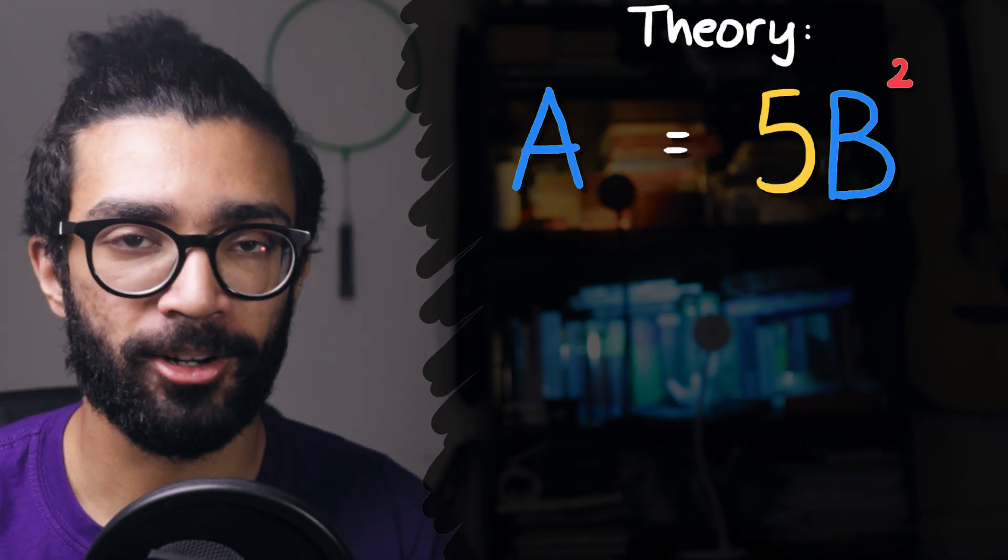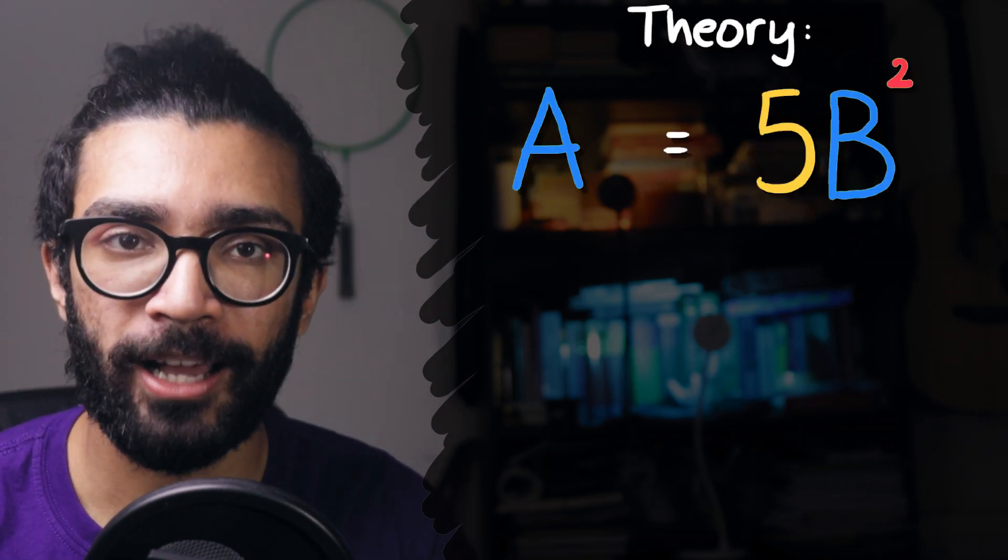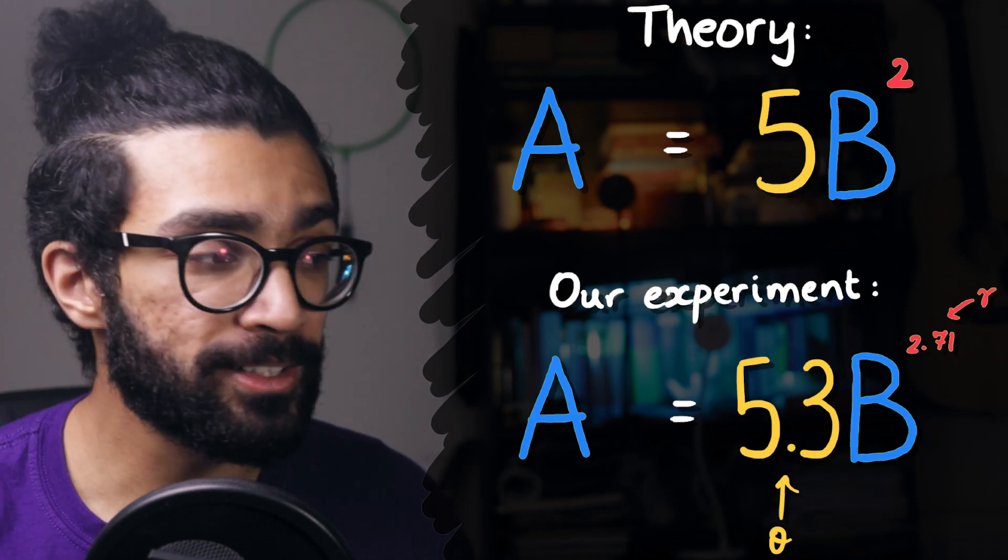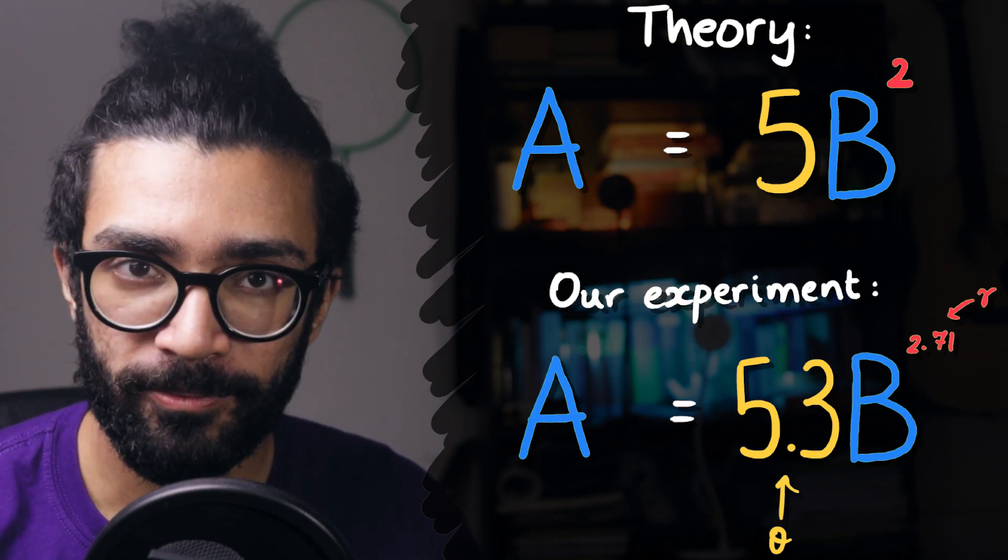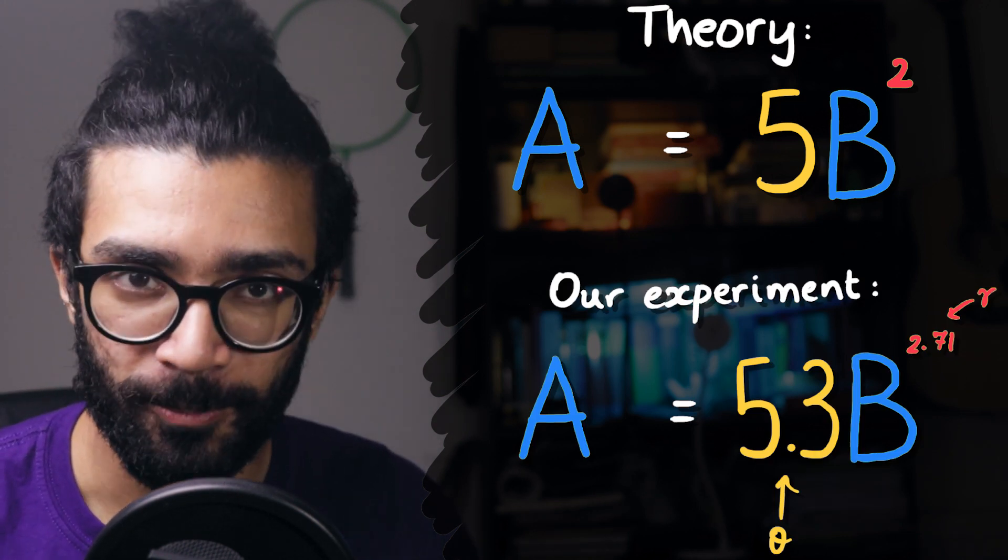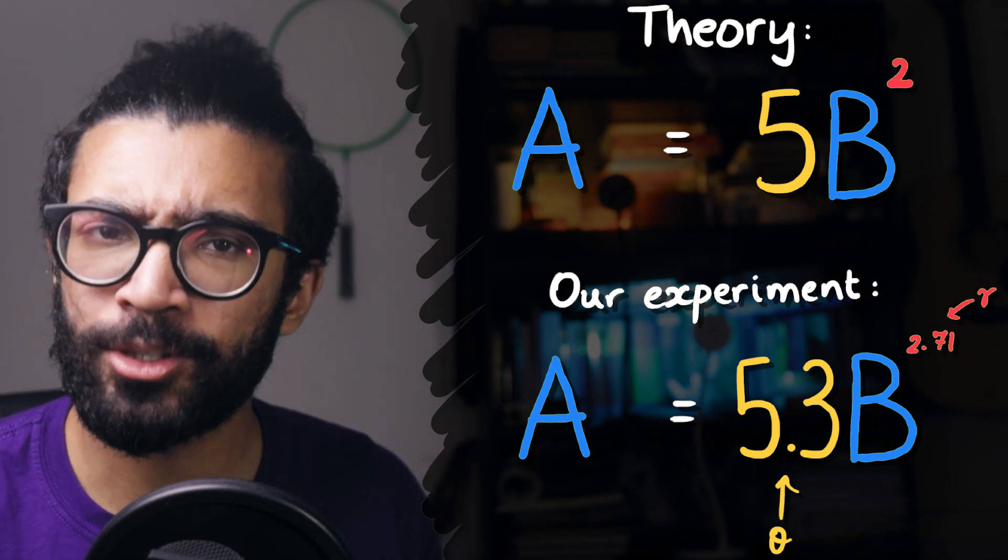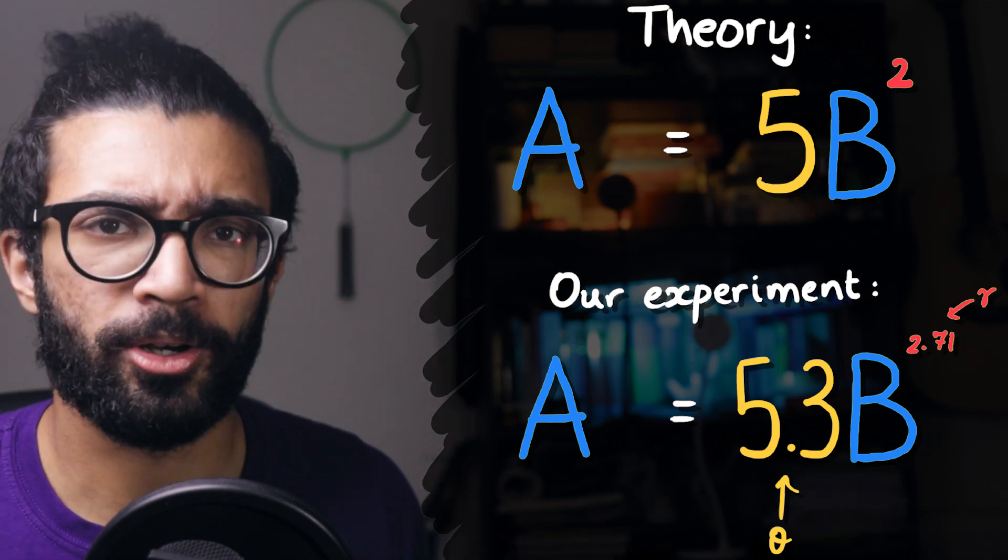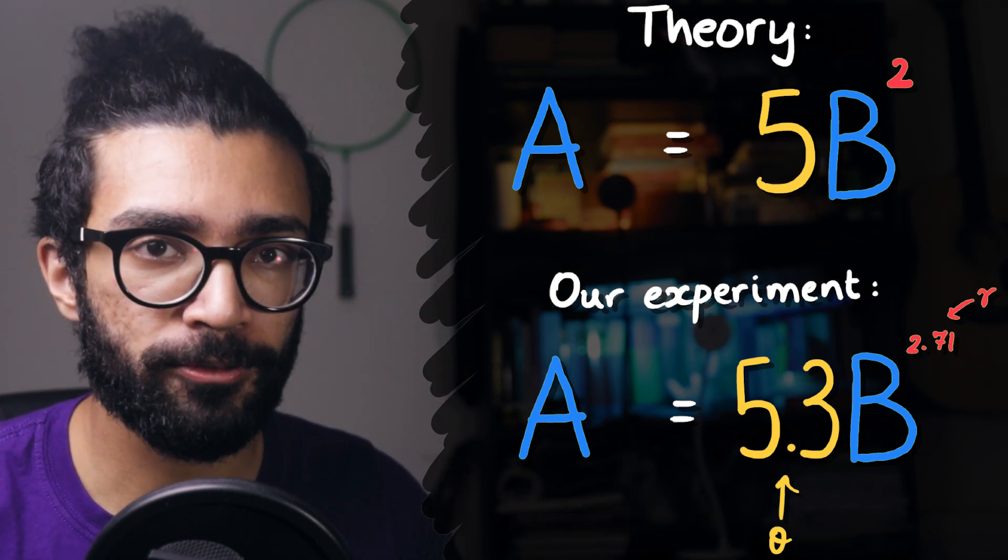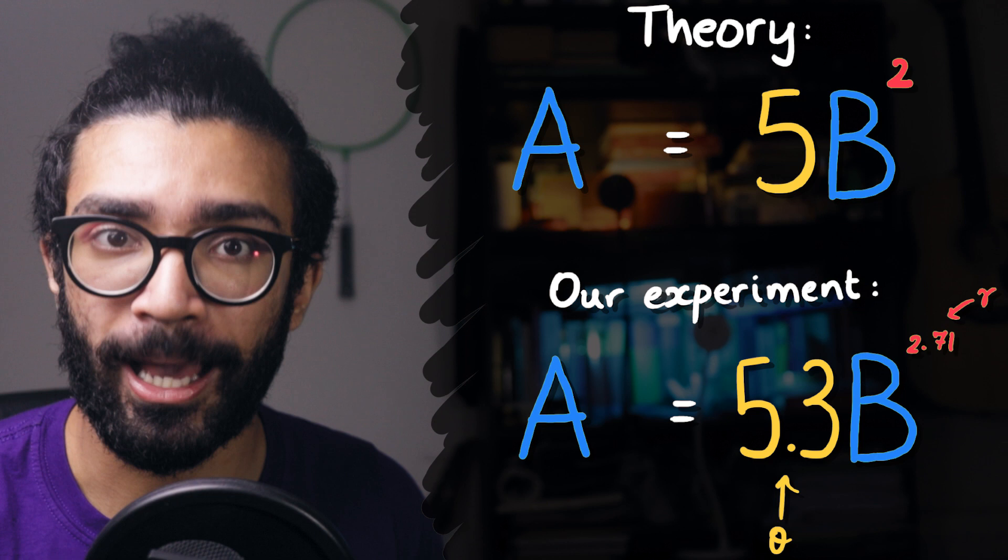Remember that in this case our theory told us that A was equal to 5B squared. And we can see just how close theta is to 5, and we can see how close gamma is to 2. If those values are close enough, our theory is fine. If those values are not close, then we need to tweak it a little bit, either by changing the constant of proportionality if theta is too different, or by changing the power if gamma is too different.